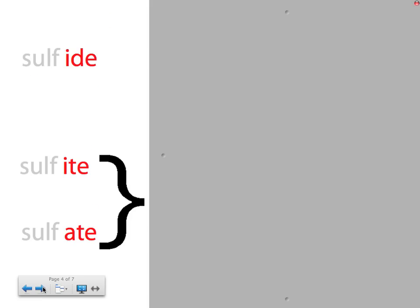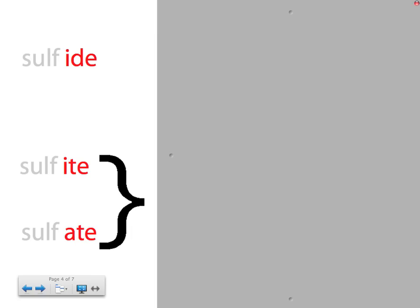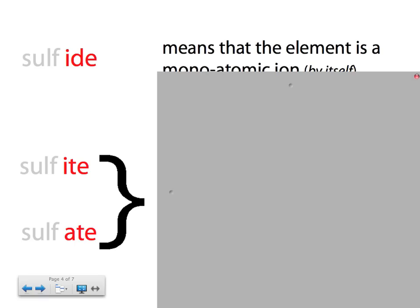Okay, well, let's reveal it. Okay, so what does '-ide' mean? '-ide', that's the big question. Well, let's reveal. Whoa, let's not reveal that way, let's reveal this way. Okay, so if you see '-ide' in the name, it means that the element is a monoatomic ion. It's by itself.